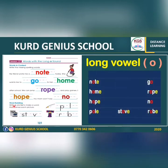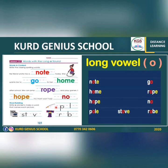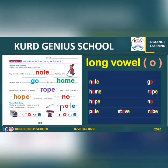The next exercise on this page is word building. It says: write O and E to make a word that names each picture. There are missing letters that you have to write to complete the words. The first picture is 'pole' — we write O and E, and we have long vowel O in 'pole.' The second picture is 'stove' — again we have long vowel O in 'stove.' The last one is 'rope' — we have long vowel O in 'rope' as well.